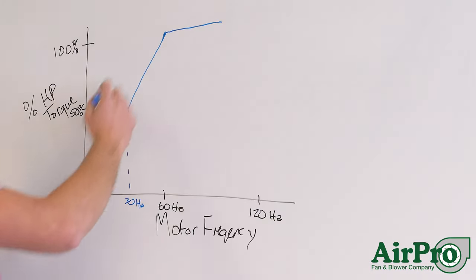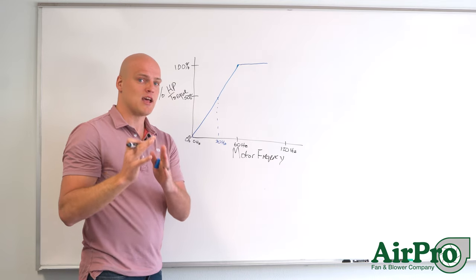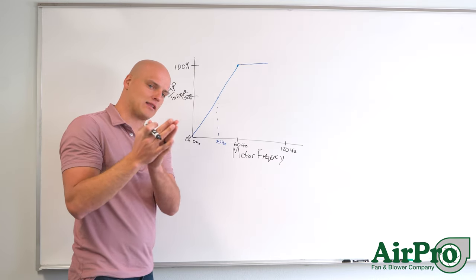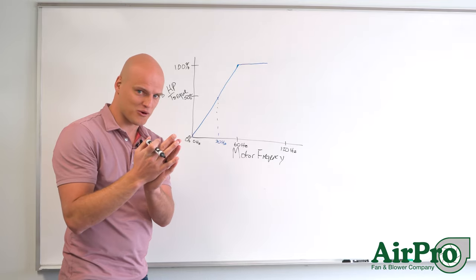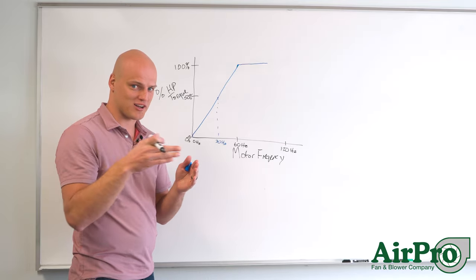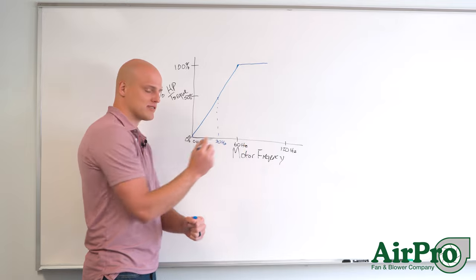So this relationship is crucial to understand if you're running a fan at less than the frequency that is available to go into the motor when it is running across the line. Which again in the U.S. is 60 hertz.